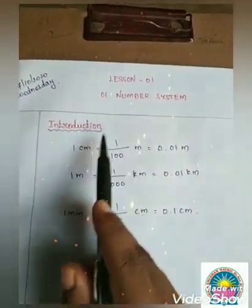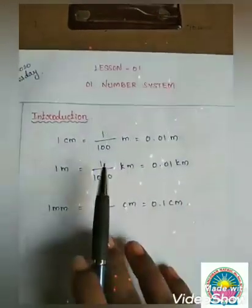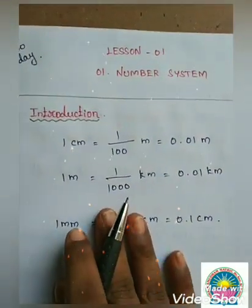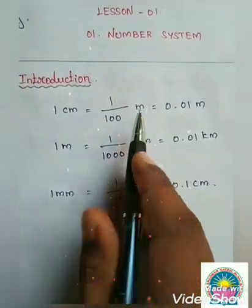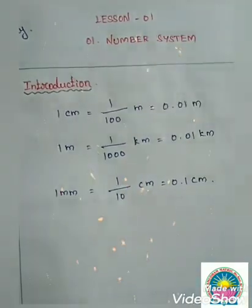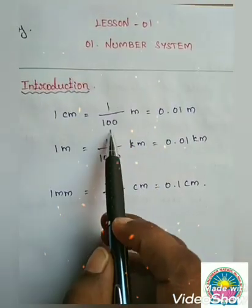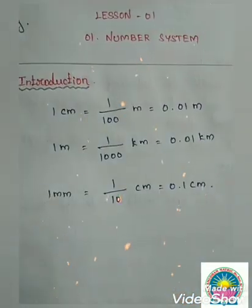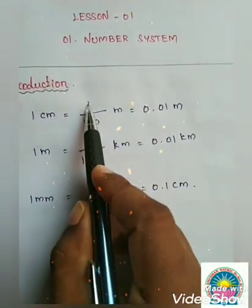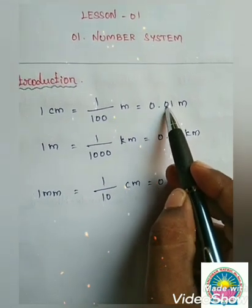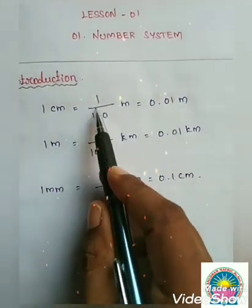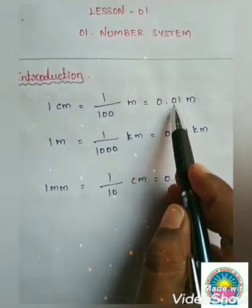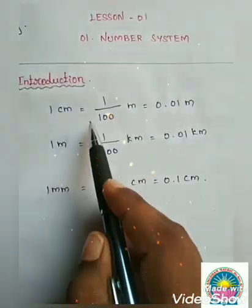Number System introduction. Listen carefully: 1 centimeter is equal to 1 by 100 meter. So 1 divided by 100 meter — here 100 means the hundred's place, so put a full stop there. So how to write that in decimal? Since the divisor is 100, put the full stop at the hundred's place. Numerator is 1, so: ones place, tens place, hundreds place — full stop at hundreds place. So 1 divided by 100 meter is equal to 0.01 meter. This is a decimal number.